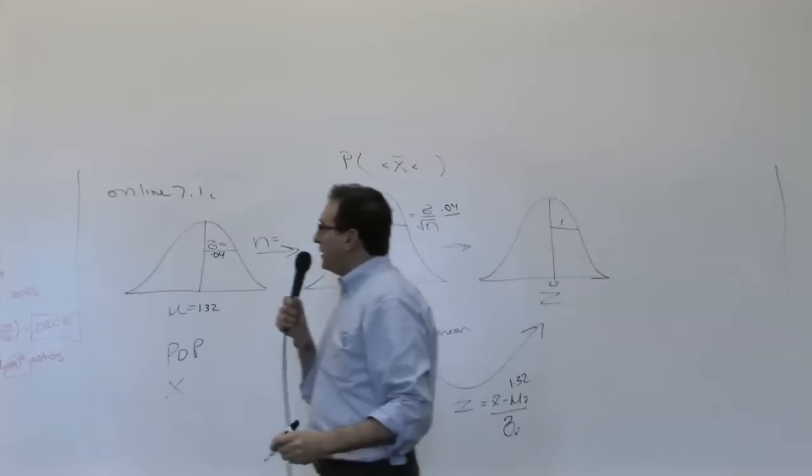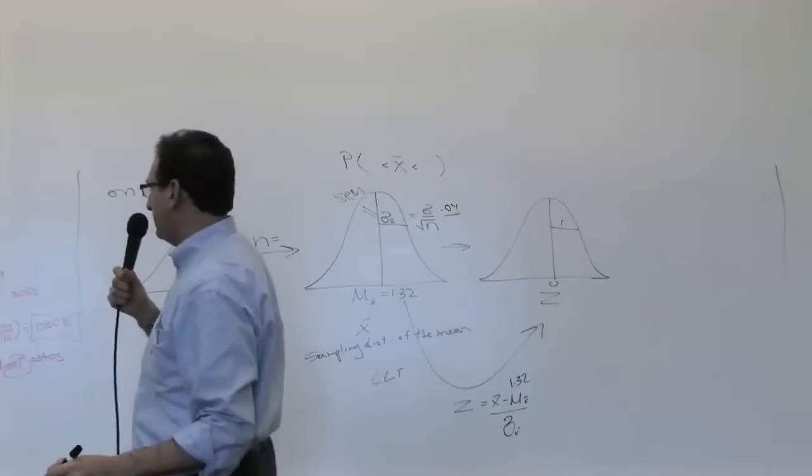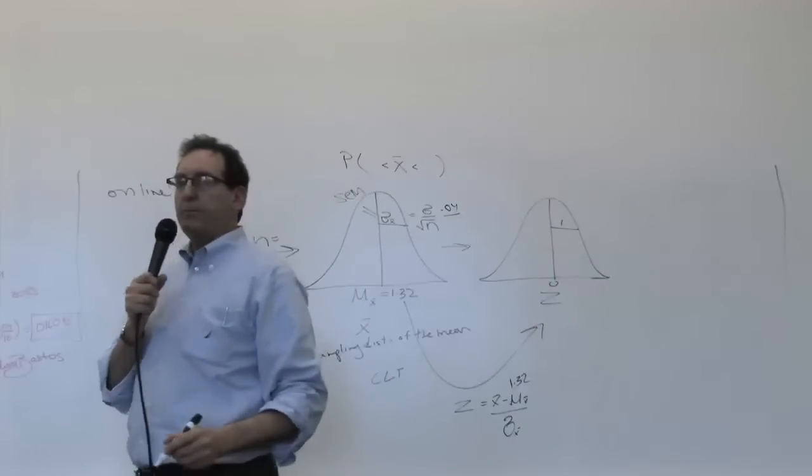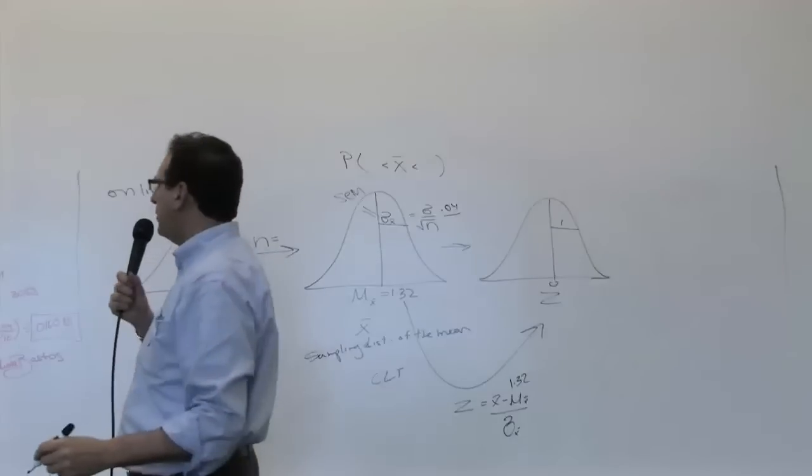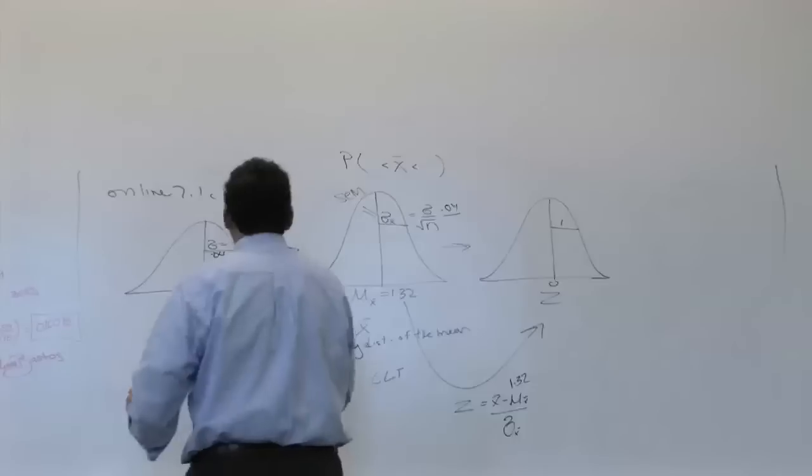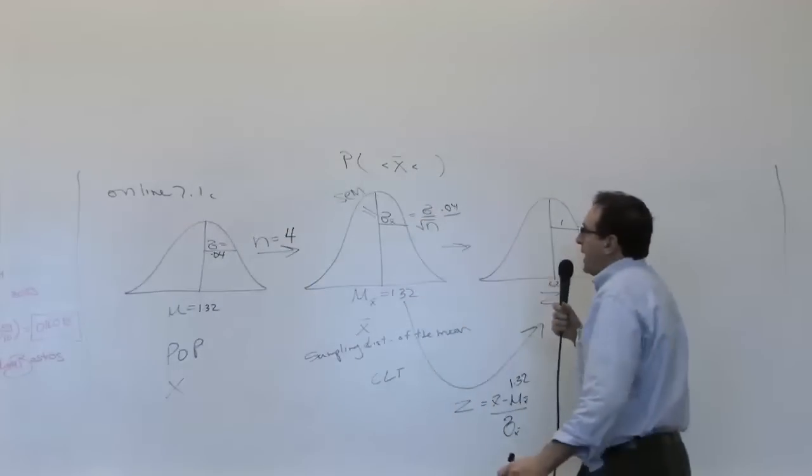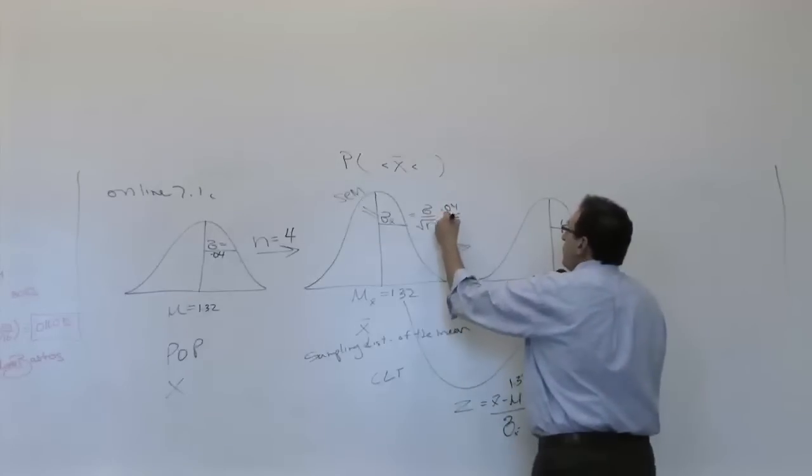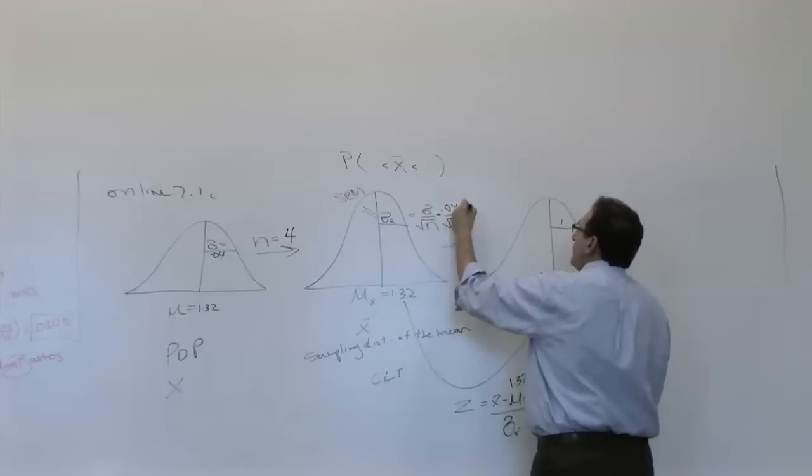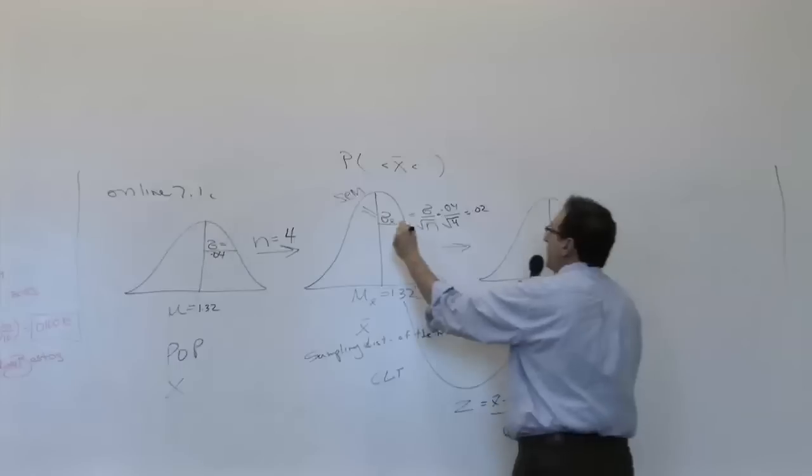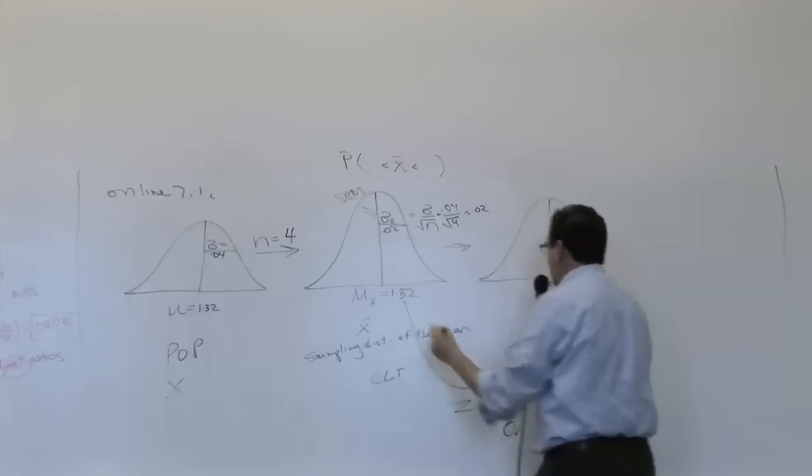And what's the sample size? The sample size is 4, which is small, but still a sample size, which means there's going to be a square root of 4 over here, which means it's going to be 0.02. And that number here will be 0.02.